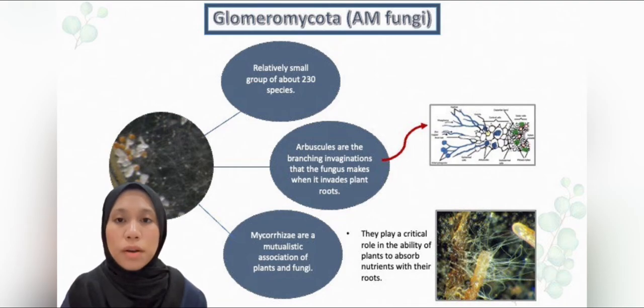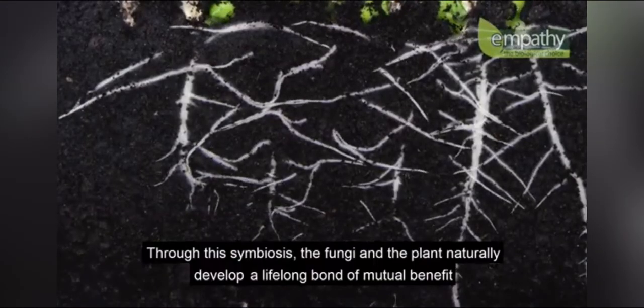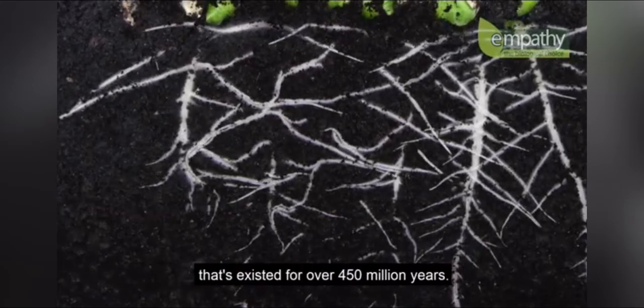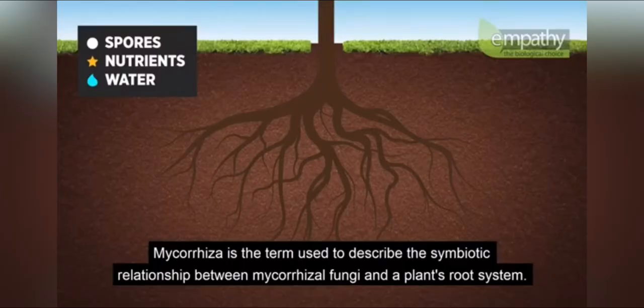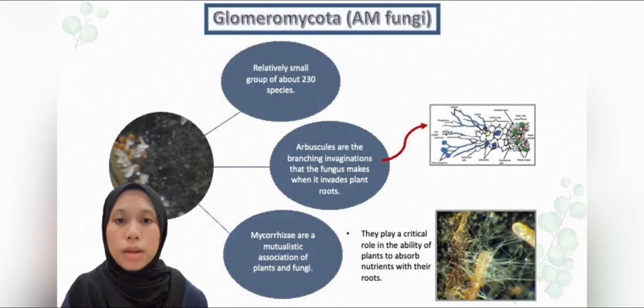And the last one is Glomeromycota, also known as AM fungi, which stands for arbuscular mycorrhizae. These AM fungi are a relatively small group of about 230 species. One of the sites called arbuscules are the branching invaginations that the fungus makes when it invades plant roots. Mycorrhizae are also a mutualistic association of plants and fungi, and this can be illustrated when they play a critical role in the ability of plants to absorb nutrients with their roots.